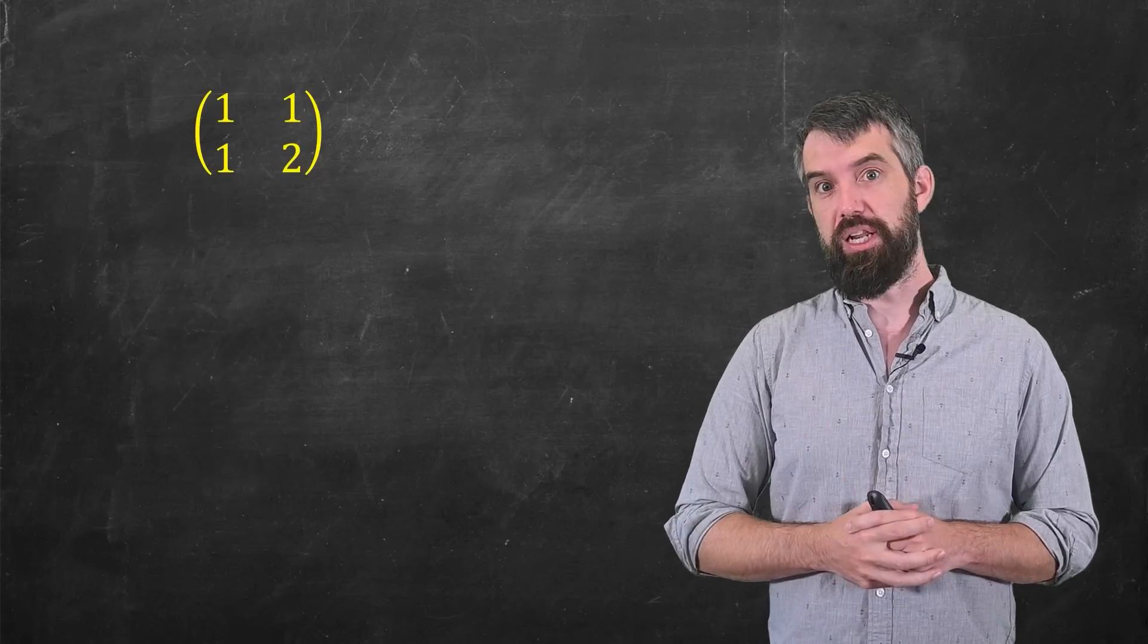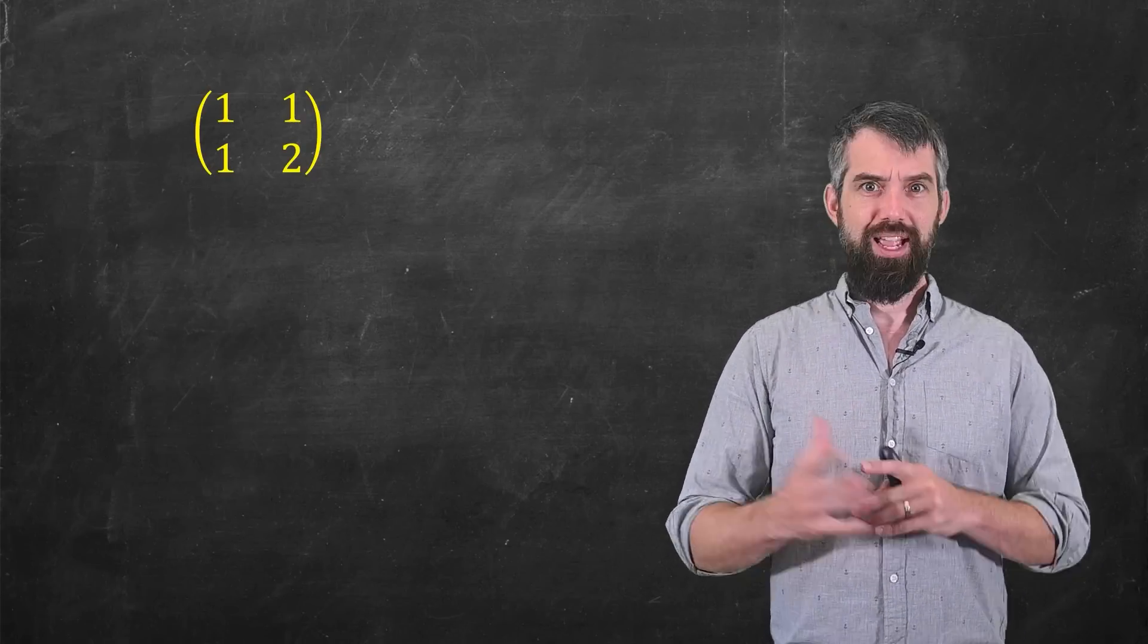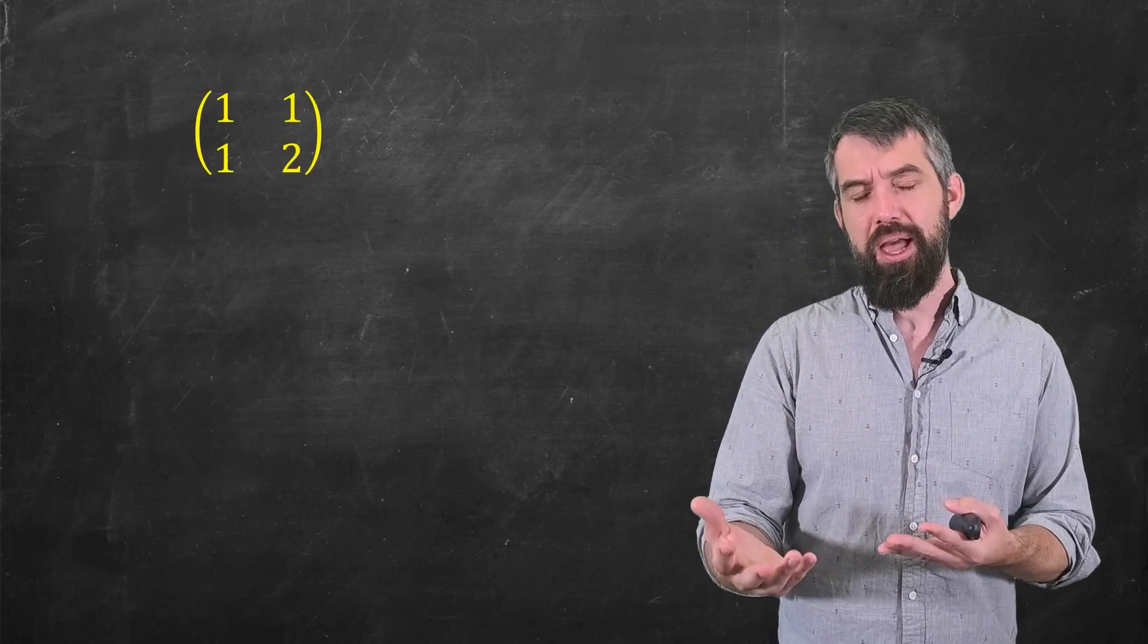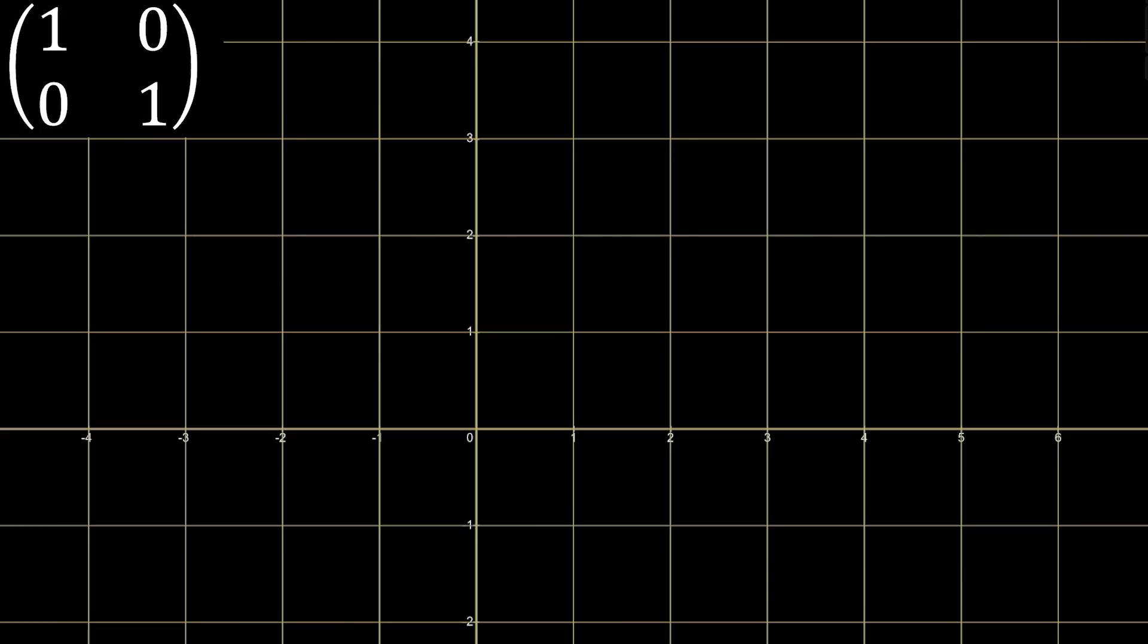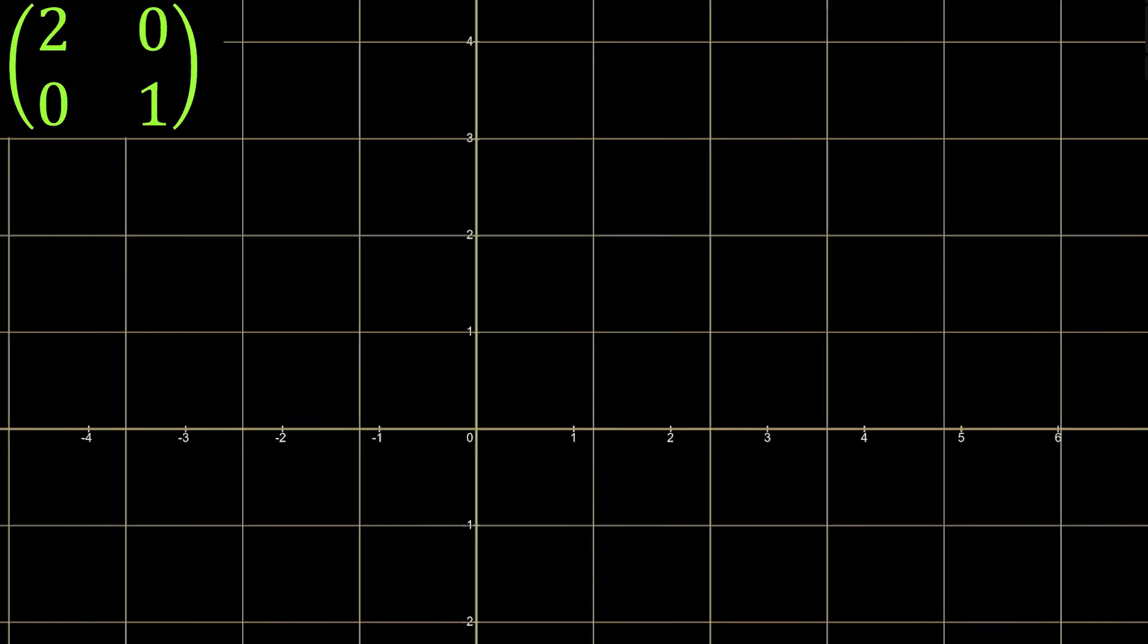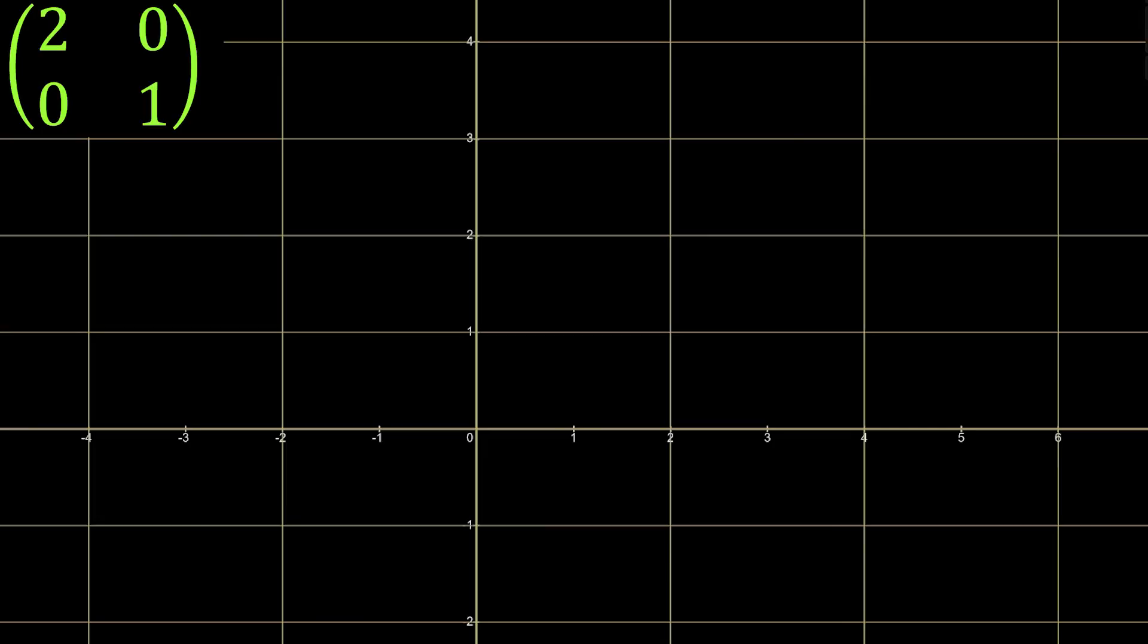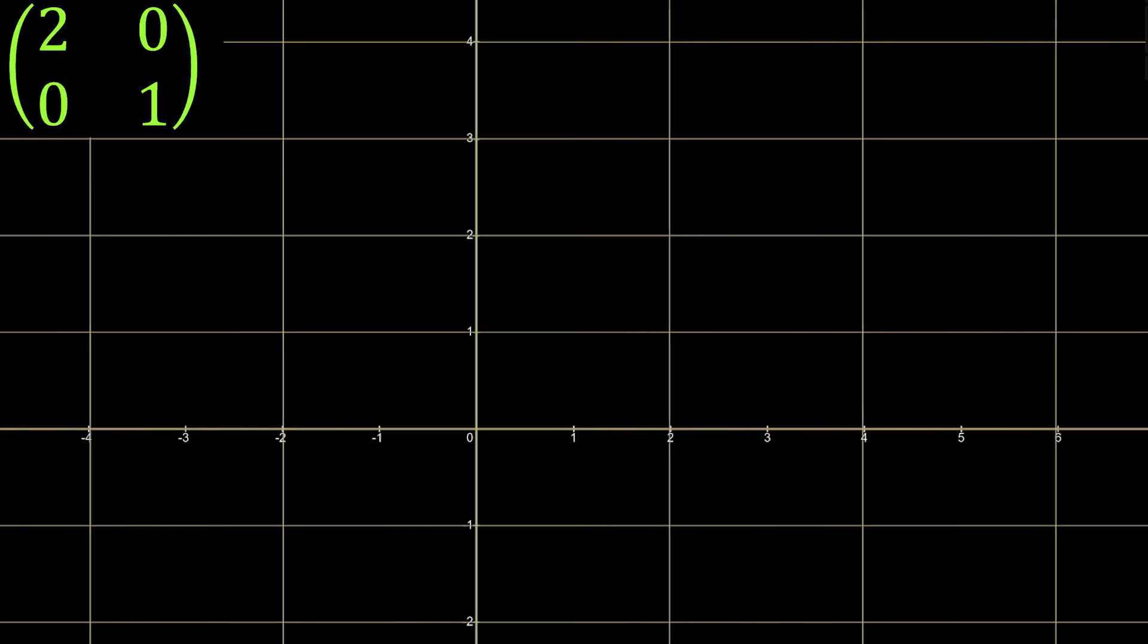Okay, so back to our Gaussian elimination. Remember how we have these three different operations that we can do? In the old static picture, the first two didn't really do anything. But now they actually do something kind of interesting. If I start with the identity matrix that leaves everything unchanged and I multiply the first row by, say, two, this is the equivalent of stretching everything horizontally by a factor of two. So the first type of operation introduces these stretching factors.